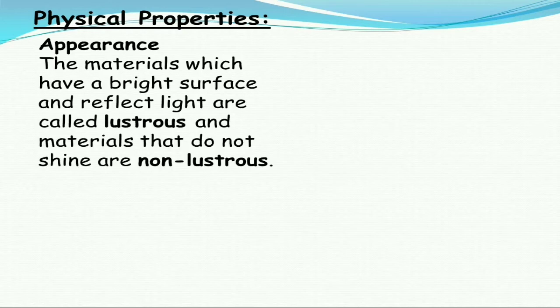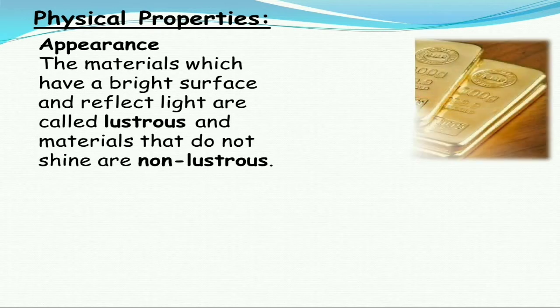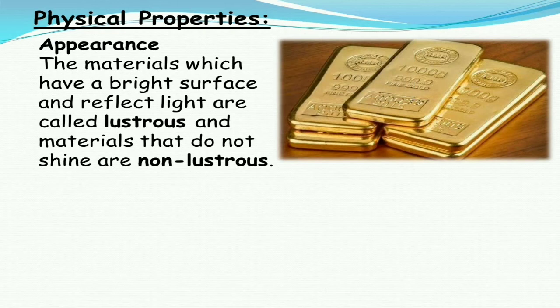The first physical property is appearance. Materials which have a bright surface and reflect light are called lustrous in nature. Materials that do not shine are called non-lustrous. For example, gold biscuits have a very shiny surface, so gold is an example of a lustrous material.